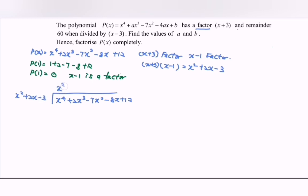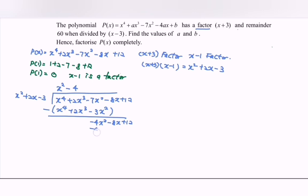We divide x⁴ + 2x³ - 7x² - 8x + 12 by x² + 2x - 3. Multiplying by x² gives x⁴ + 2x³ - 3x². Subtracting, we get 0, then -4x², -8x, plus 12. Then -4x² - 8x + 12, giving a remainder of 0.